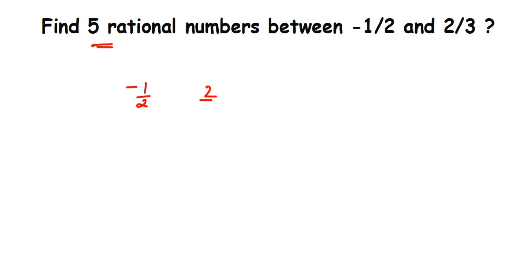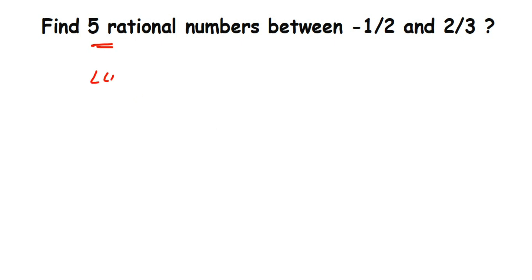Whenever this type of question is given, the very first step is to check the denominators. Here the denominators are 2 and 3 — they are not the same. If they are not the same, we have to make them the same. We can do this by taking the LCM of the denominators. The LCM of 2 and 3 is equal to 6.